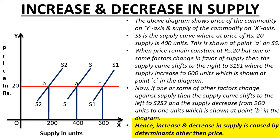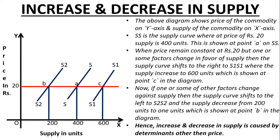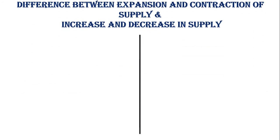To sum up, increase and decrease in supply is caused by determinants other than price — where price is constant and other factors change. The movement of supply from S to S1 is known as increase in supply, and the movement from S to S2 is known as decrease in supply.